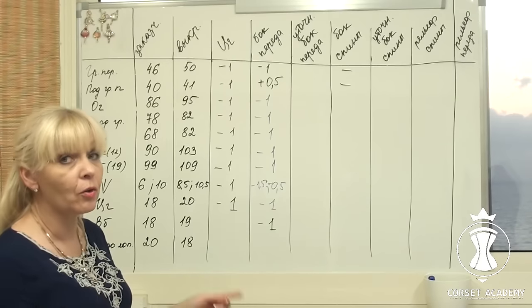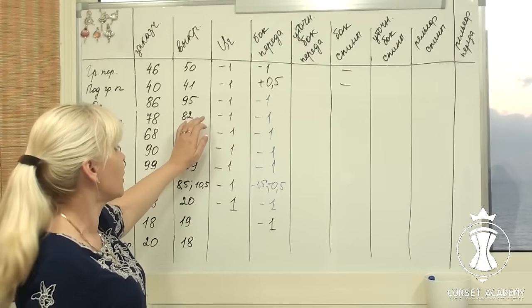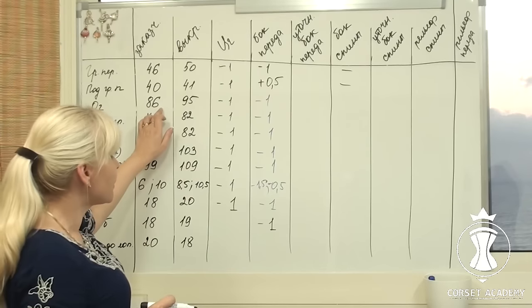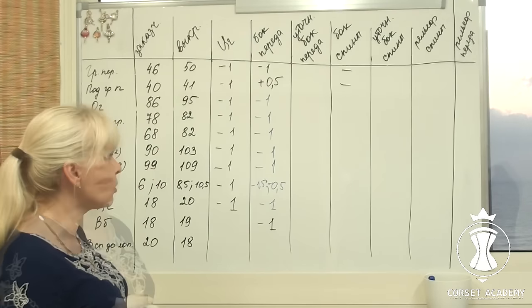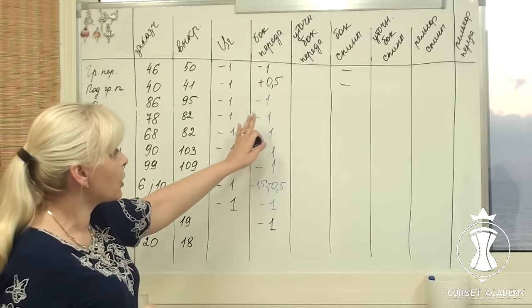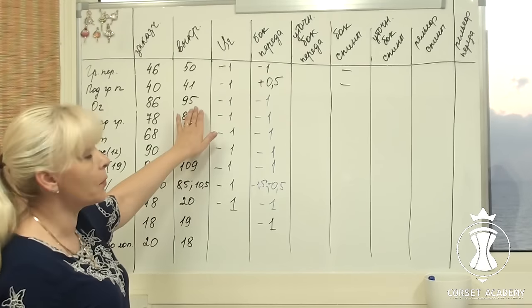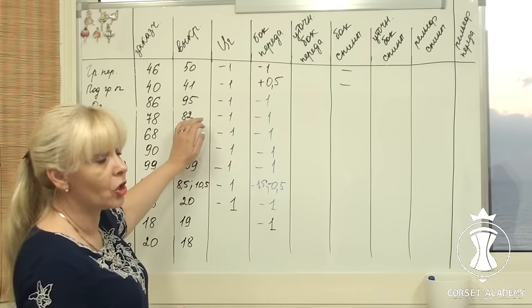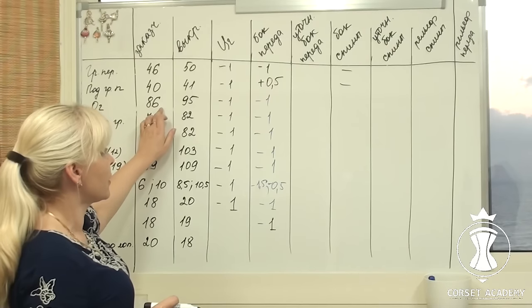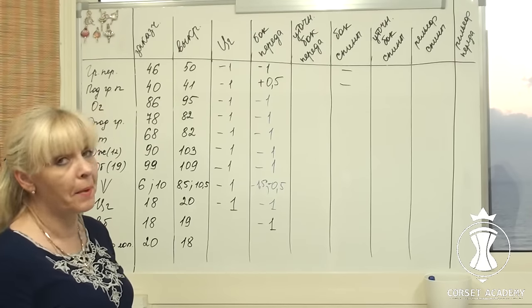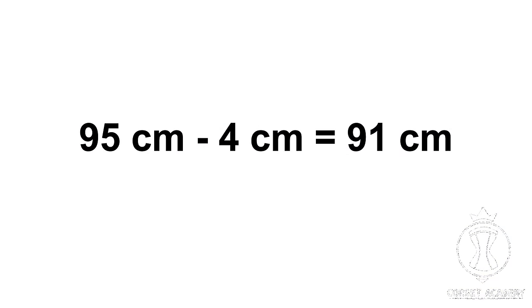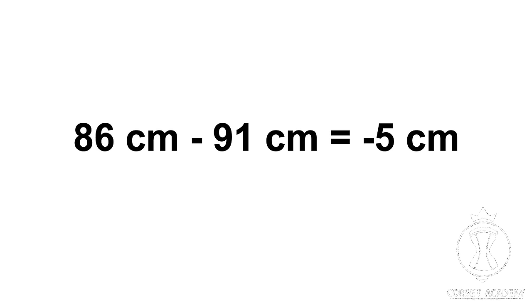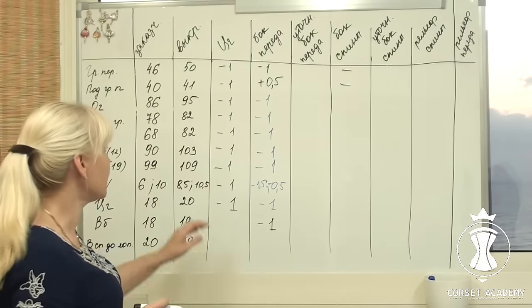Bust circumference: it is 86 cm on the client and 95 cm on the pattern. But I have already narrowed the center of the front by 1 cm from either side — 2 cm total — and shifted the side seam line of the front 1 cm inwards — 2 cm total. Summing up, I have reduced the standard pattern by 4 cm at the bust line level. Moreover, I have already removed the same value of 4 cm along the entire length of the back. 95 cm minus 4 cm equals 91 cm. 86 cm minus 91 cm equals negative 5 cm. There are 5 extra cm on the pattern.